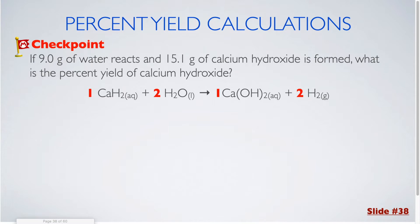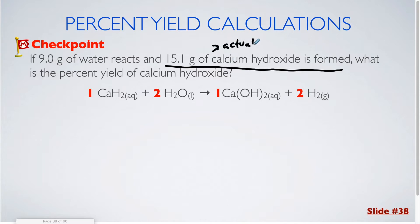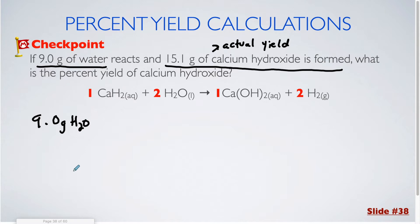In our first checkpoint question, we are told that we have 9 grams of water reacting, and 15.1 grams of calcium hydroxide is formed. What is the percent yield of calcium hydroxide? The 15.1 grams of calcium hydroxide formed is going to be our actual yield, so we'll save that for the percent yield calculation. We're going to start with the 9.0 grams of water. If I take 9.0 grams of water and want to know how much calcium hydroxide I was supposed to make, I can solve that with a simple three-step conversion.